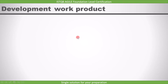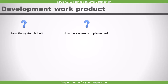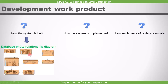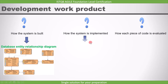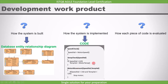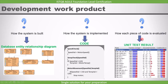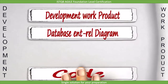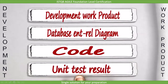Next is the development work product. It describes how the system is built, how the system is implemented, and how each piece of code is evaluated. The structure is represented by a database entity relationship diagram. How the system is actually implemented is known from the code, and how each piece of code is evaluated is shown by the automated unit test results. What you need to remember is: database entity relationship diagram, code, and unit test results are the work products of a development task.